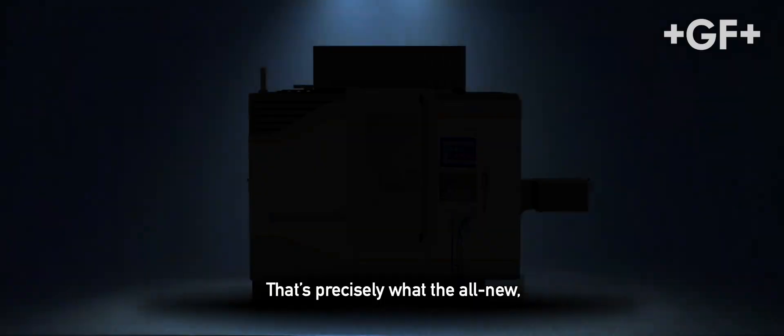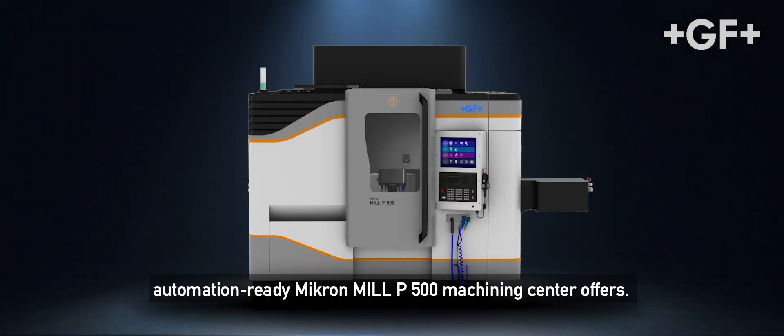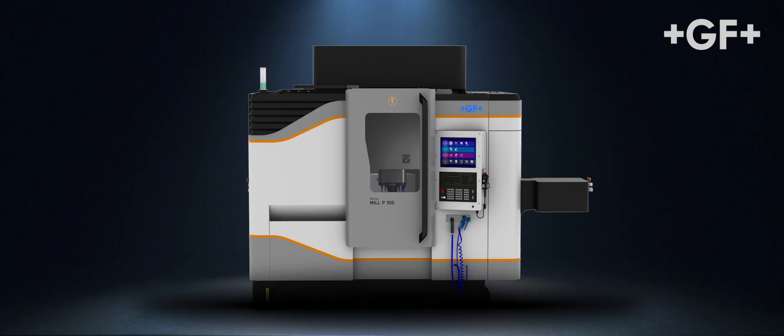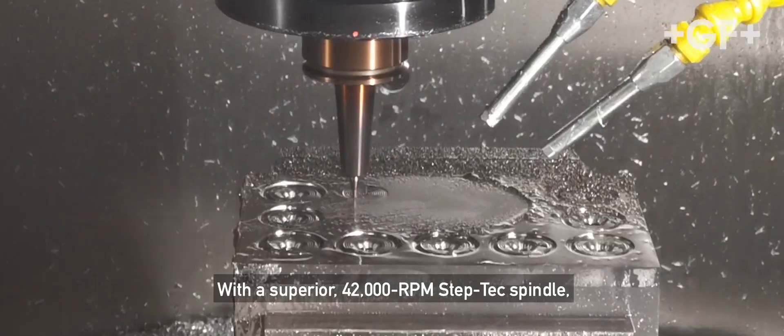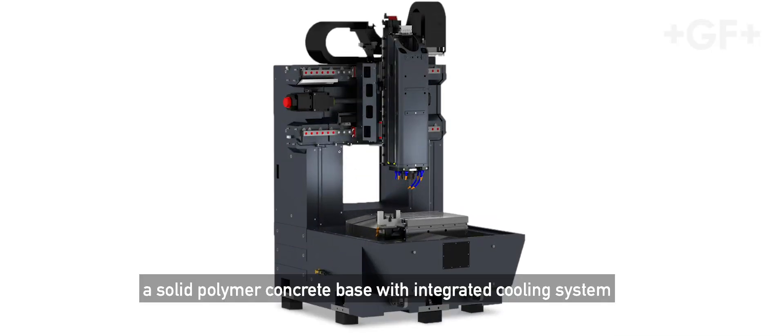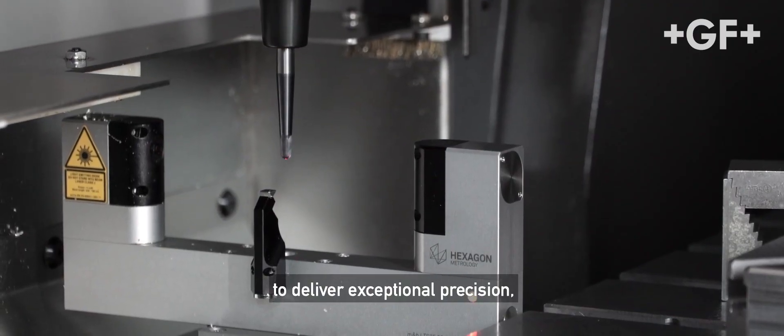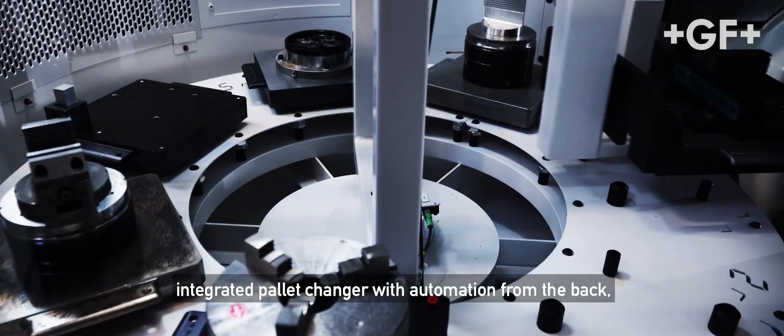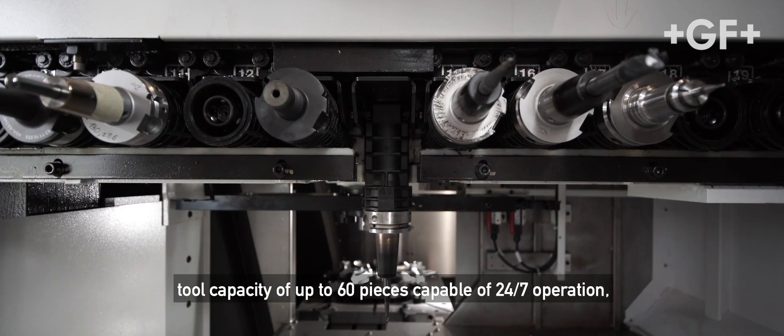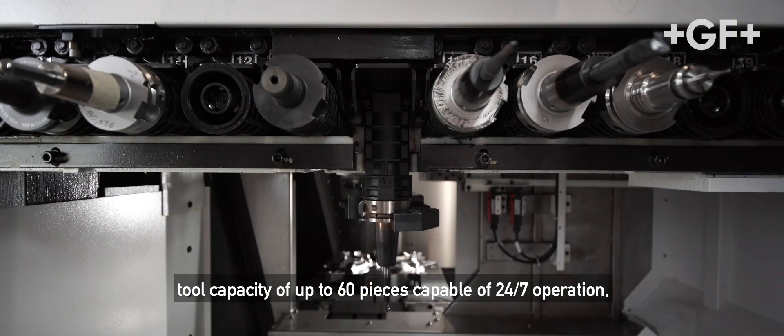That's precisely what the all-new automation-ready Micron Mill P500 Machining Center offers. With a superior 42,000 RPM StepTex spindle, a solid polymer concrete base with integrated cooling system to deliver exceptional precision, integrated pallet changer with automation from the back, tool capacity of up to 60 pieces, capable of 24/7 operation.